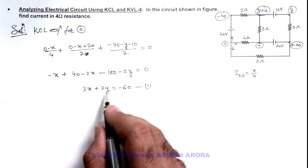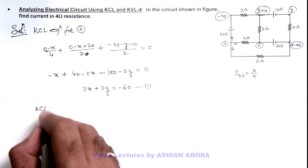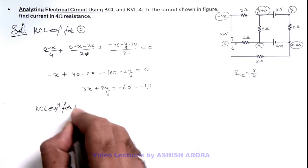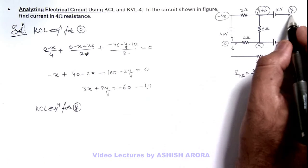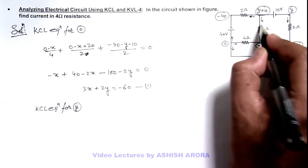We need another equation in x and y to get the value of x. So here we write KCL equation for y. For the junction at y, we take this current, this current, and this current; sum is equal to zero.